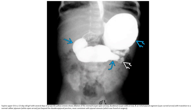The supine radiograph in a one-day-old infant shows a dilated stomach and proximal duodenum, with an initial transitional signal narrowing to a normal caliber duodenum just beyond the duodenal flexure, most consistent with duodenal stenosis.